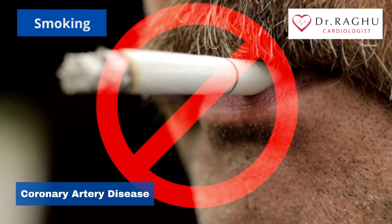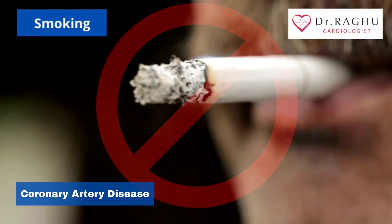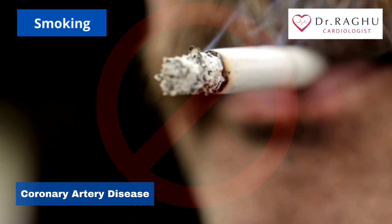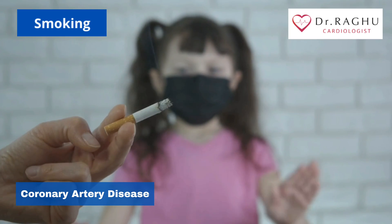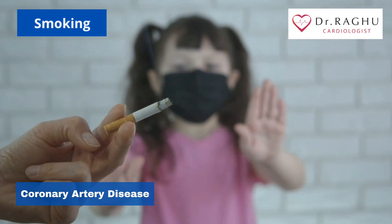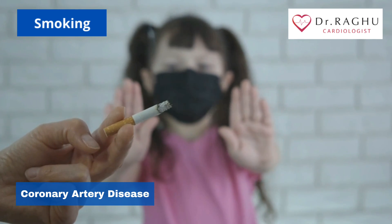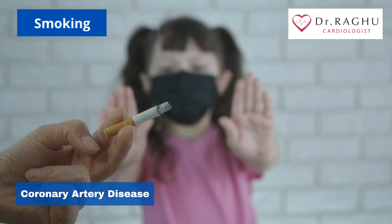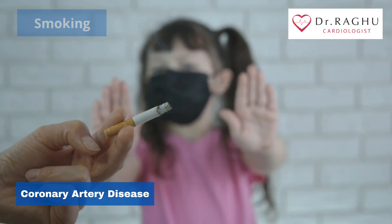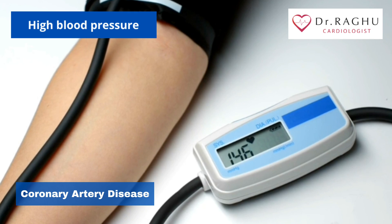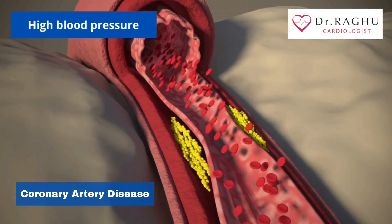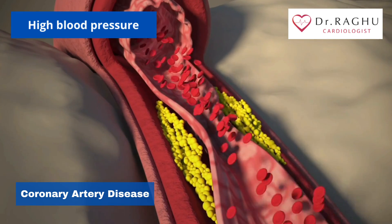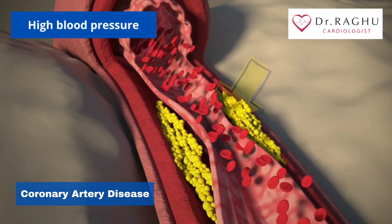People who smoke have a significantly increased risk of heart disease. Breathing in secondhand smoke also increases a person's risk of coronary artery disease. Uncontrolled high blood pressure can result in hardening and thickening of your arteries, narrowing the channel through which blood can flow.